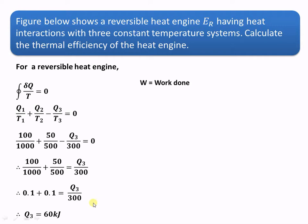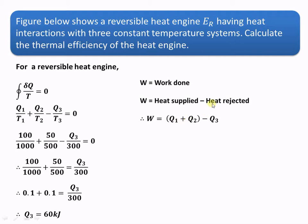The work done by a heat engine is given by heat supplied minus heat rejected. In this particular case heat is supplied from two sources, Q1 plus Q2, and heat rejected is Q3. Substituting the values, we get the work done as 90 kJ.